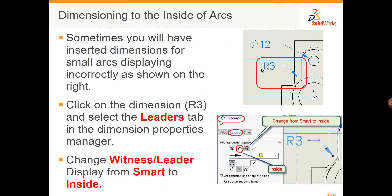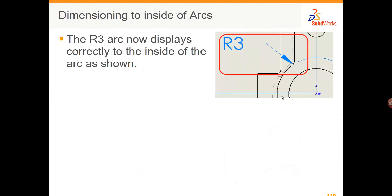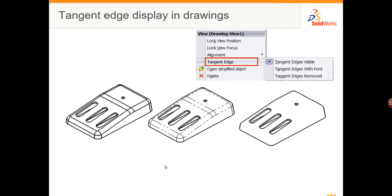Sometimes when putting in smaller dimensions you might have a radius that displays awkwardly. You can correct that by going into the Leaders tab of the dimension properties and changing it from Smart to Inside. Finally, for pictorial views when not using shaded, you have three tangent edge options: tangent edges visible, tangent edges with font, and no tangent edges removed. Usually we use tangent edges with font for pictorial views.